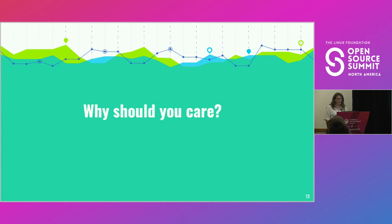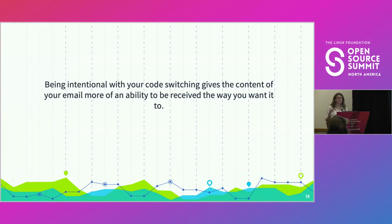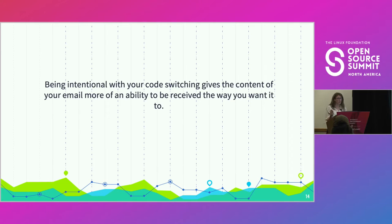So why should you care? When you are intentional with your code switching, with the message that you are giving out, you have more control over how it's received. The whole reason we're communicating is because we have a message — either an ask or a request — and we'd like people to receive it the way we intend it, because there is absolutely nothing worse when something is taken the way you did not intend it, because there's a lot of cleanup that has to happen.